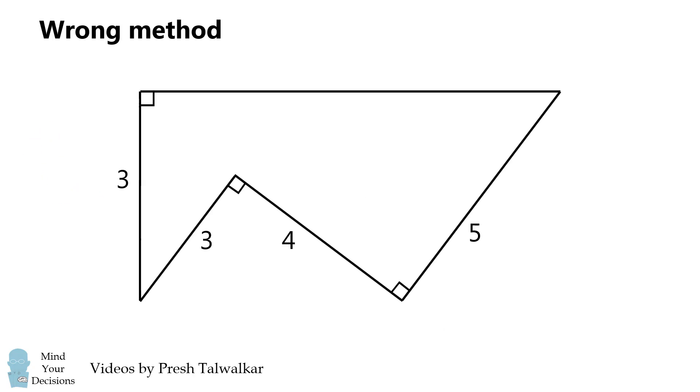So first, let's go over the incorrect way to solve this problem. Many people approached it as follows. Imagine connecting this hypotenuse. This is a right triangle with legs of 3 and 4, so its hypotenuse will be 5.